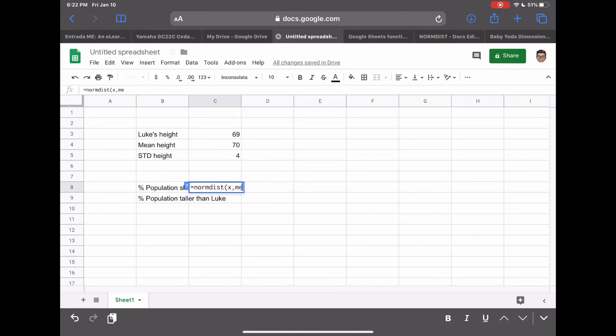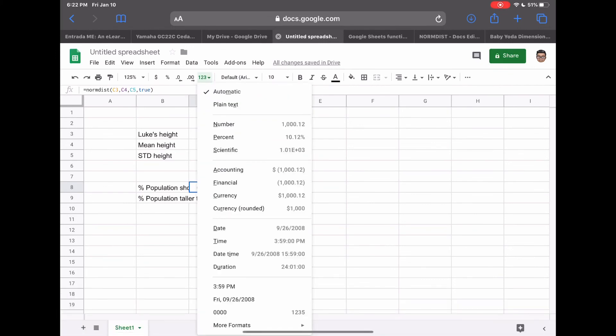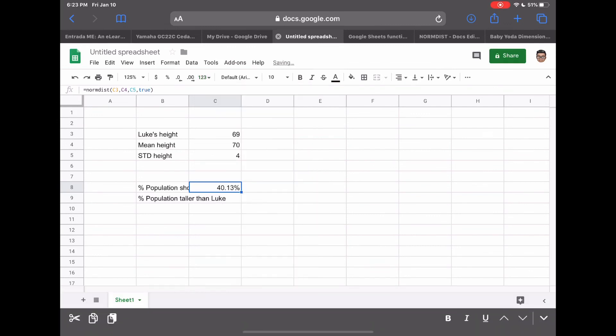So let's fill in these values here. So the x we know is 69, right? We know that the mean height is going to be 70, right? And then the standard deviation is going to be four. And we said we're going to want this to be true. And so we get here that 40% of the population is going to be shorter than Luke. We can put this into a percent if we want. So let's do that percent. There 40.13%. So now what percent of the population is taller than Luke? Well, we want to get the opposite of that. So we're going to subtract that from 100% or one minus this number. And we get 59.87%.